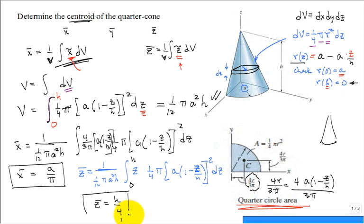Now, if you went back to the full cone — not the quarter cone — would it have the same z̄? Check the back cover of the textbook for the full cone: yes, z̄ = h/4 there as well. So whether it's a quarter cone, half cone, three-quarter cone, or full cone, the centroid height is always h/4.